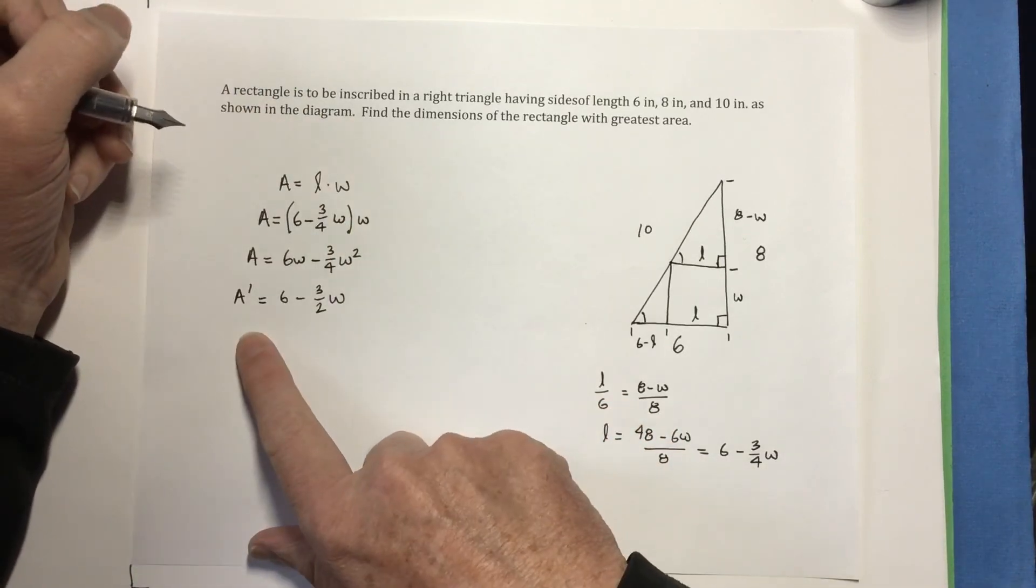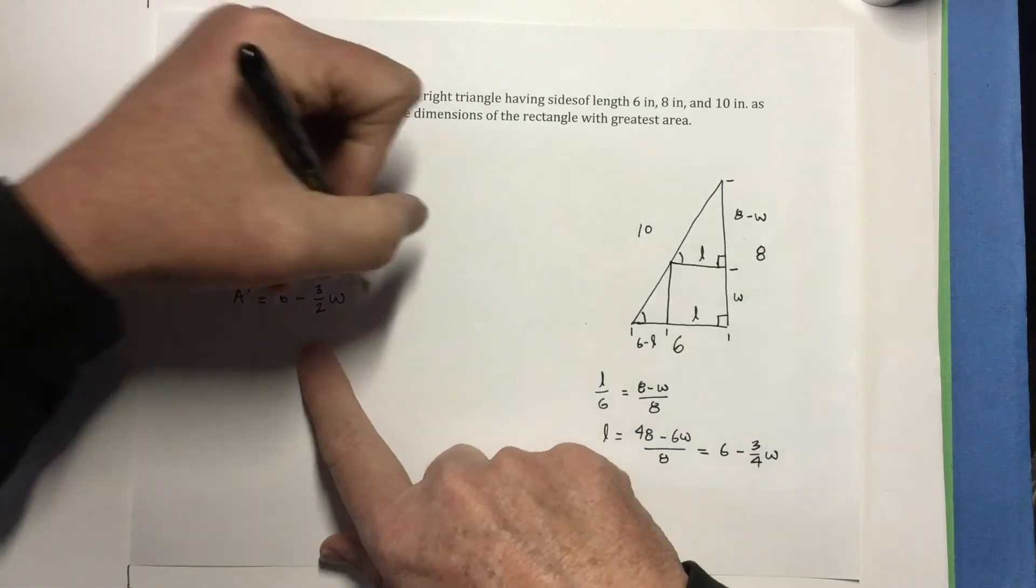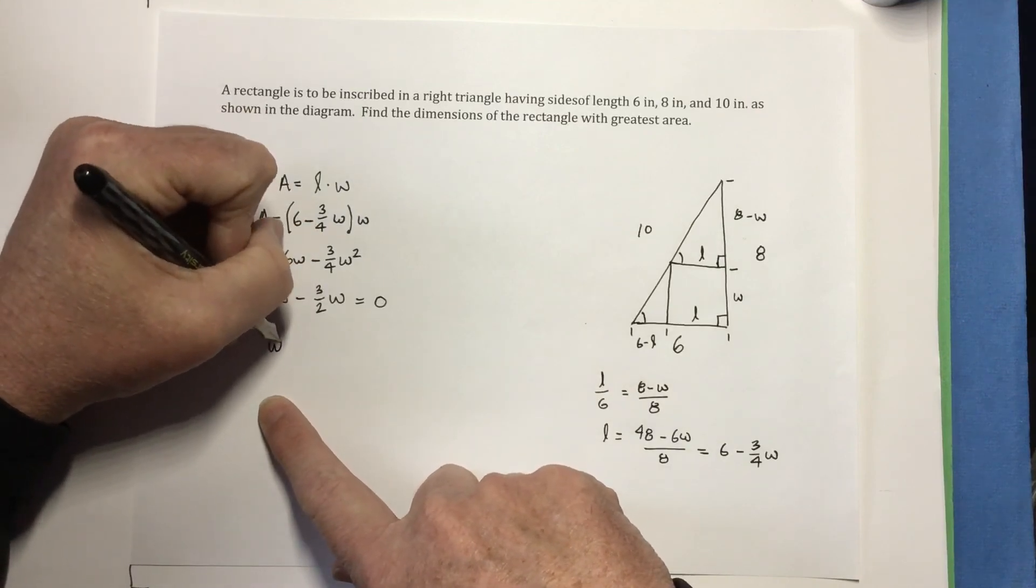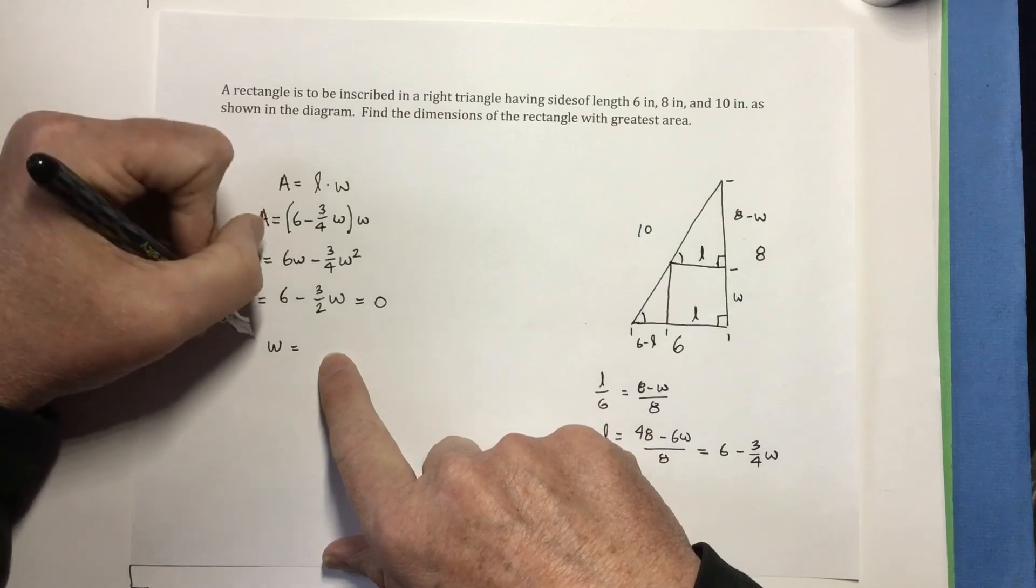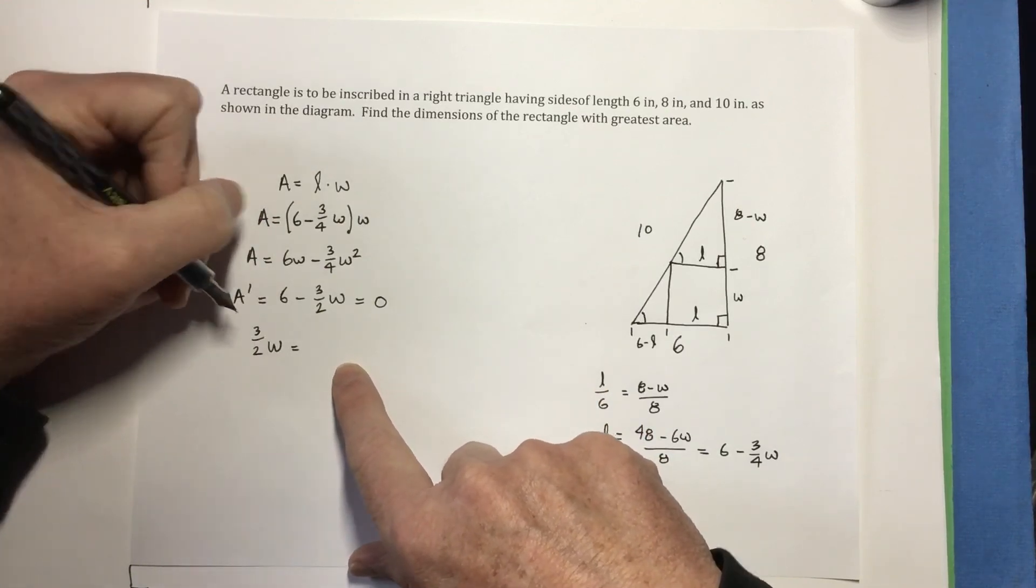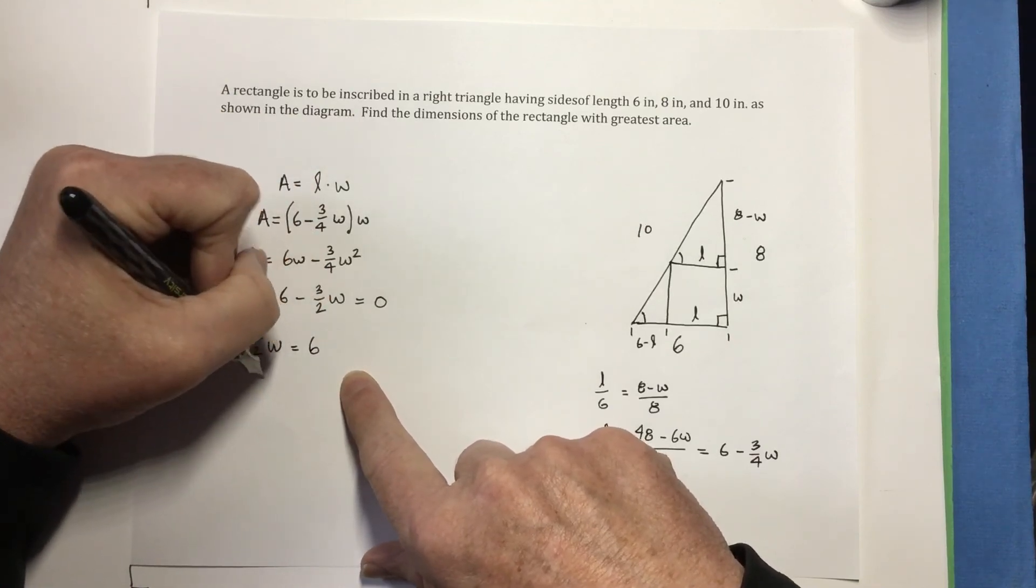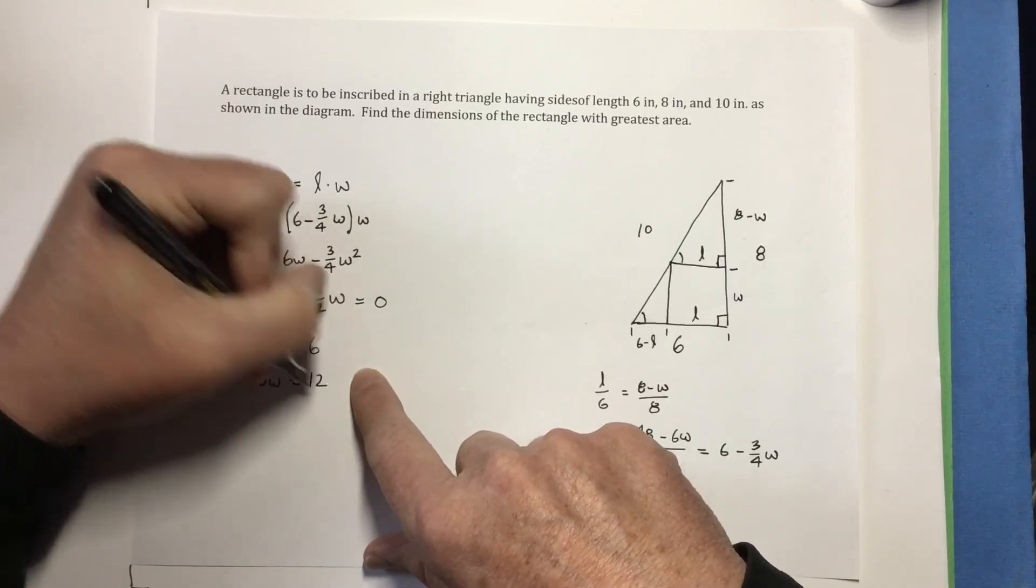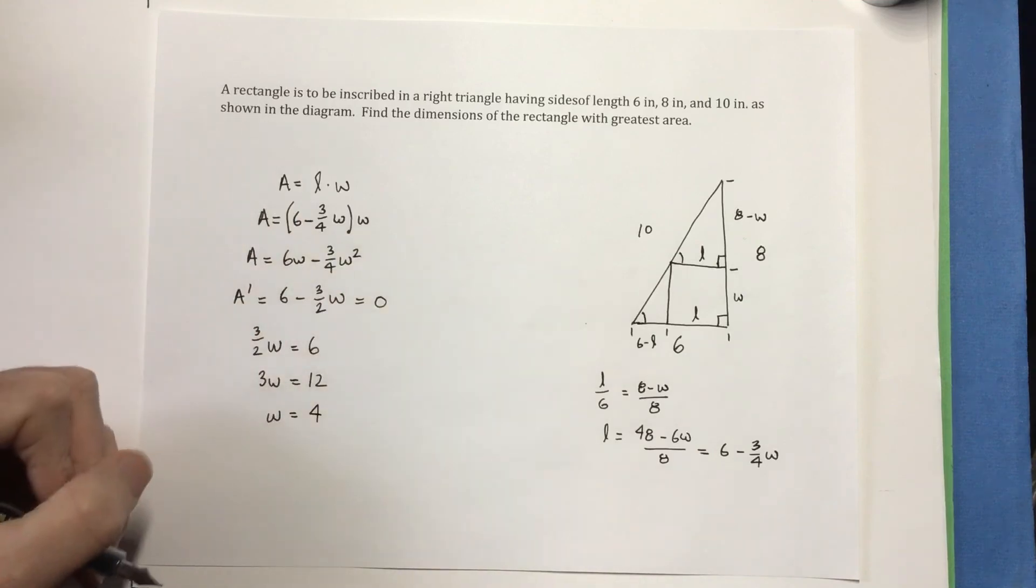And now to maximize that, I want to set it equal to 0. So if I set this equal to 0, that means 3 halves W will equal 6. So 3W equals 2 times 6, which is 12. So W equals 4.